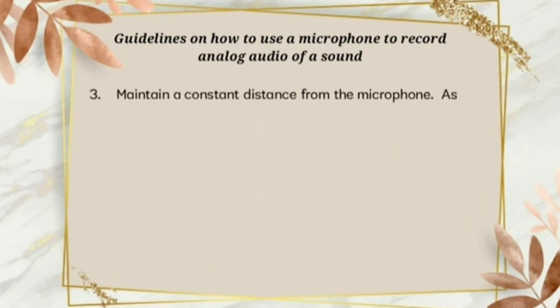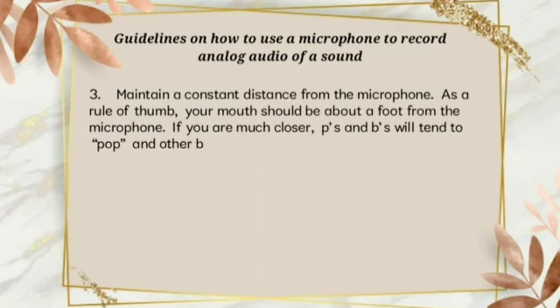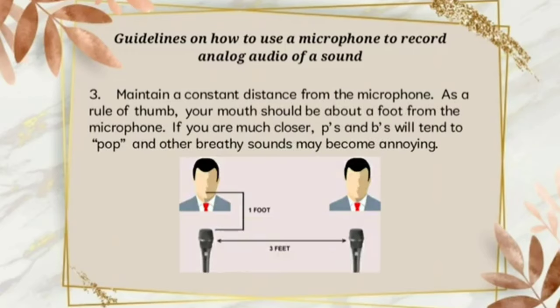Third, maintain a constant distance from the microphone. As a rule of thumb, your mouth should be about a foot from the microphone. If you are much closer, P and B will tend to pop and other breathy sounds may become annoying. The P and B sounds should be studied together. They are produced in the same part of the mouth, which is in the front, with the tongue in the same place. The only difference is that the P sound is a voiceless sound and the B sound is a voiced sound.